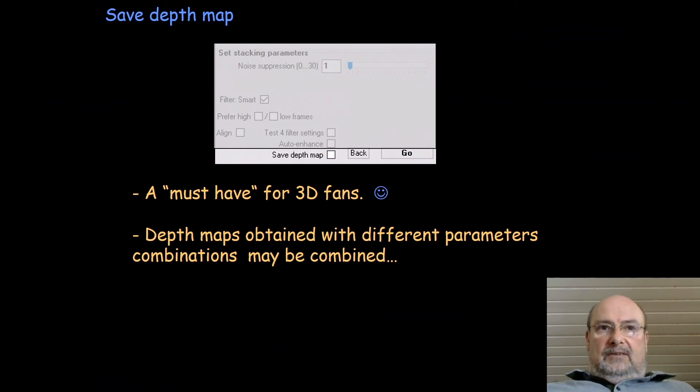Last but not least, the depth map. This is generated every time but it's not automatically saved. You have to click it here to choose it. Definitely it's a must-have for 3D fans because the map can be used to make synthetic 3D images. You can have the maps obtained with different parameters and then you can combine them, edit them, and so on. Therefore for 3D fans, always use the save depth map option.